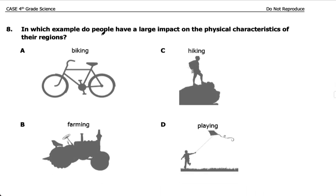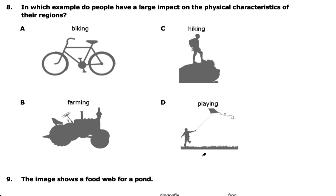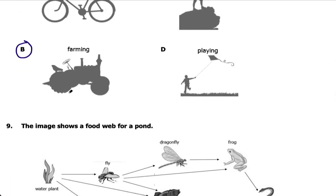Number eight: in which example do people have a large impact on the physical characteristics of a region? Biking, hiking, and playing with a kite are all similar — they're not going to change much of a region. But farming involves tilling the land, testing the soil, irrigation, and requiring flat land. So the answer is B — farming is definitely going to have a large impact on the physical characteristics of a region.